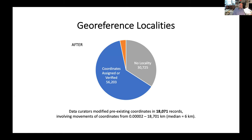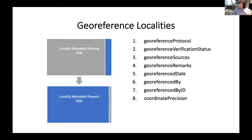The median amount that a pre-existing coordinate was moved was 6 kilometers. Importantly, the relevant metadata fields went from mostly empty to mostly complete, with such useful information added as georeferencing protocol and georeferencing resources.